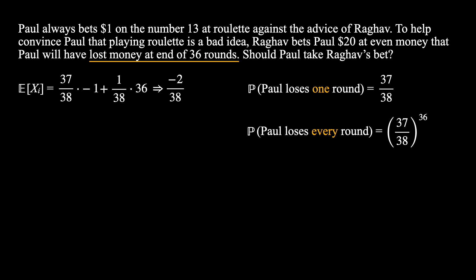We can now use the linearity of expectation to calculate the expected value of x — Paul's account value — after 36 rounds. Via linearity, this is simply minus 2 divided by 38, multiplied by 36, which gives us minus 72 divided by 38.